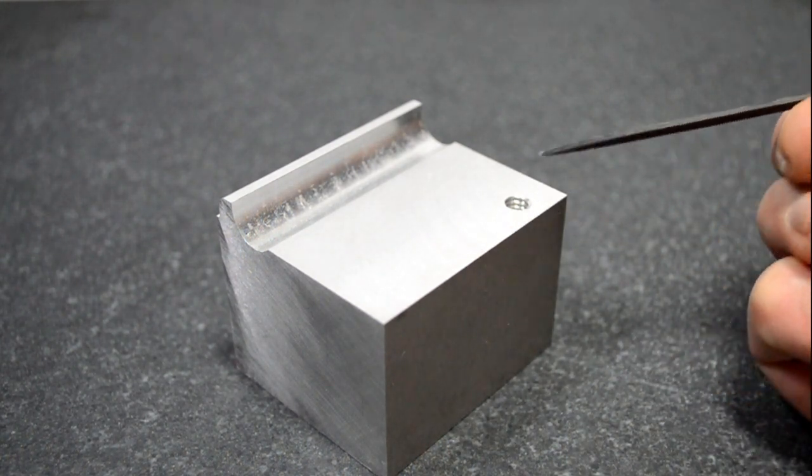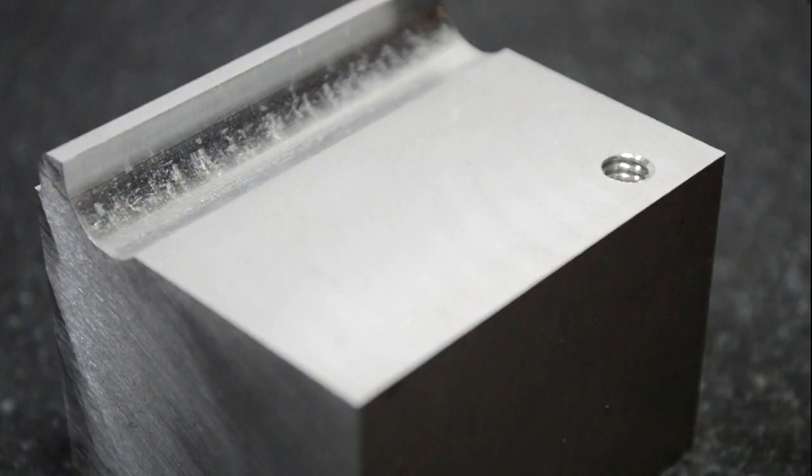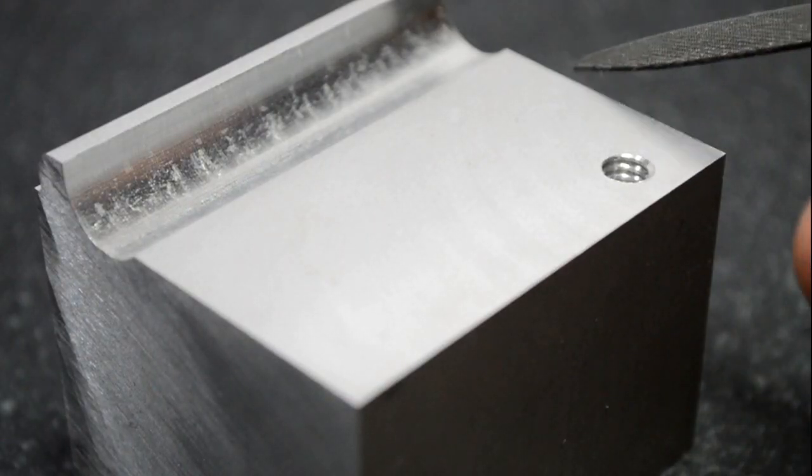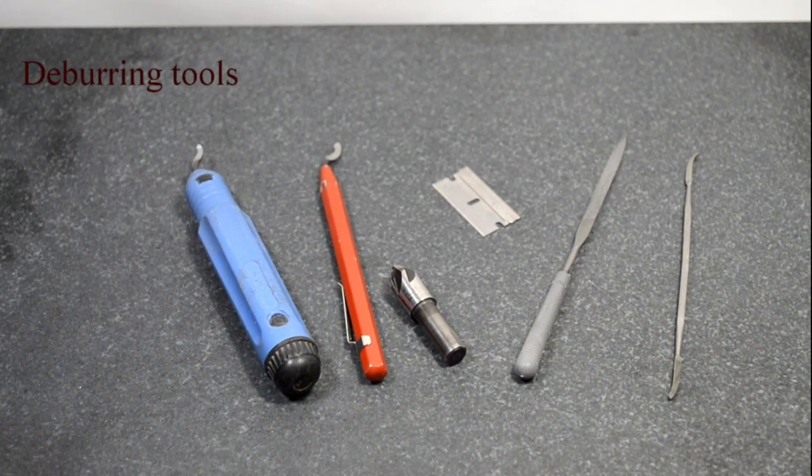It's been cleaned up a little bit. The rollover burr is still there. So there's a number of ways to get rid of it. And these are the deburring tools that we would use.